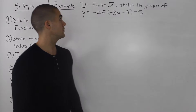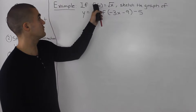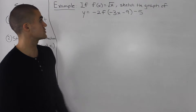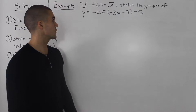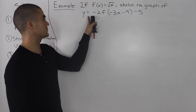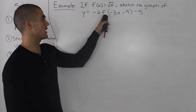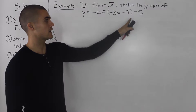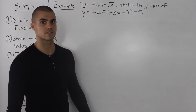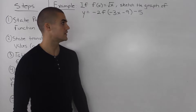Moving on to the next example: if f of x is equal to the square root of x, sketch the graph of y is equal to negative 2 f of negative 3x minus 9, minus 5.